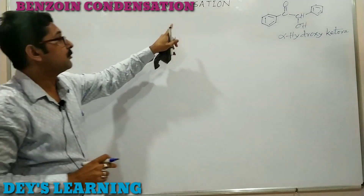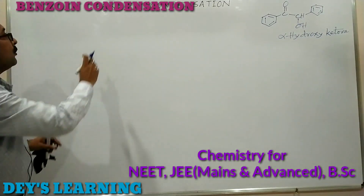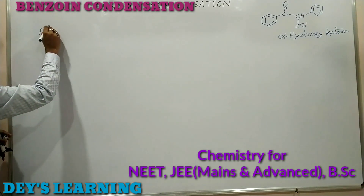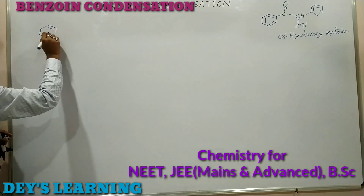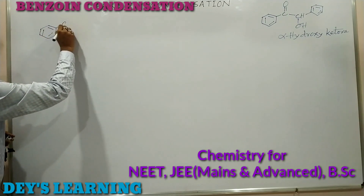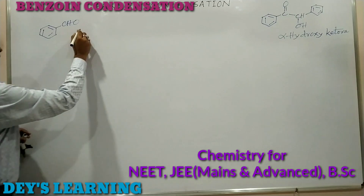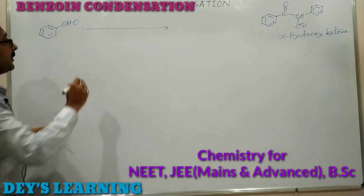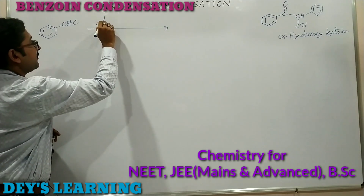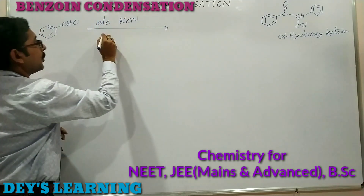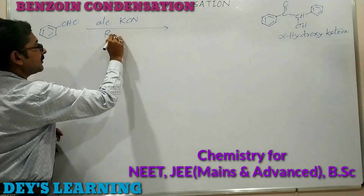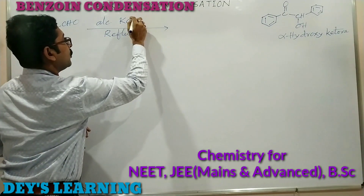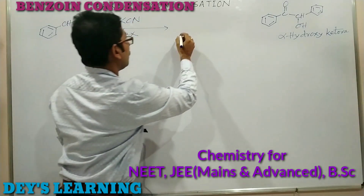The reaction to prepare benzoin is known as benzoin condensation. This compound can be prepared from benzaldehyde, which is an aromatic aldehyde. Benzaldehyde on treatment with alcoholic potassium cyanide on reflux gives the product benzoin.